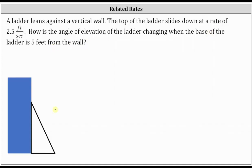Looking at the diagram below, let's label all three sides of the right triangle. Let's label the horizontal leg X, the vertical leg Y, and the hypotenuse — which would be the length of the ladder — Z. The angle of elevation is this angle here in the right triangle. Let's label the angle of elevation theta.